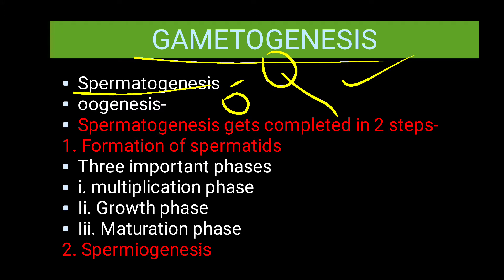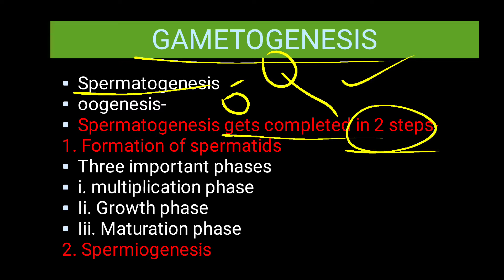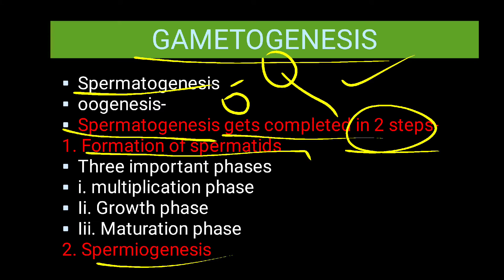Sperms are also called spermatozoa. The spermatogenesis process is completed in two steps — though it is a continuous process, we have divided it for convenience. First is the formation of spermatids, and second is spermiogenesis. Don't be confused between 'spermio' and 'spermato' — I will explain that later.